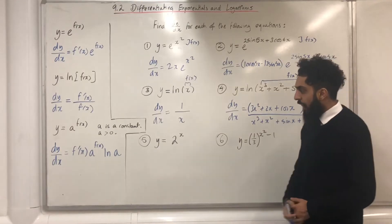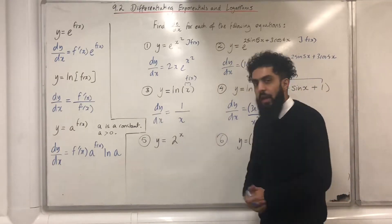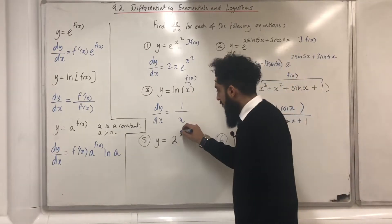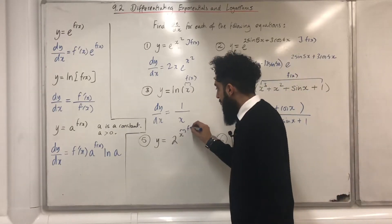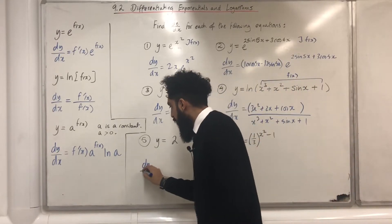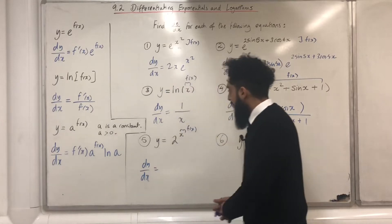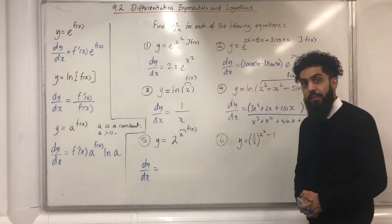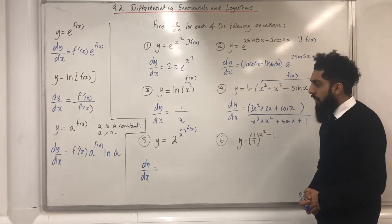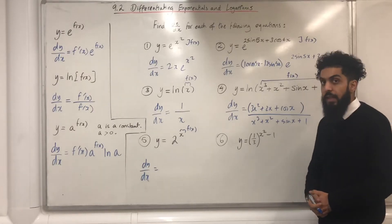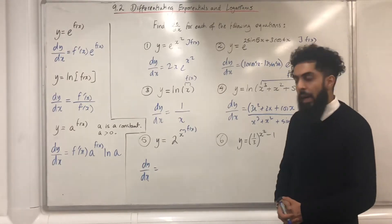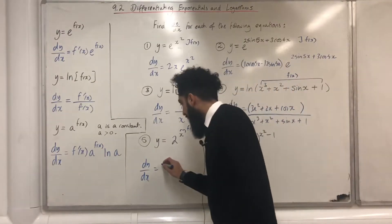Question number 5: y equal 2 to the power x. My x is the f(x). dy/dx is equal to — I take x and differentiate it, I get 1 — so 1 times 2 to the power x ln2, which is just 2 to the power x ln2.